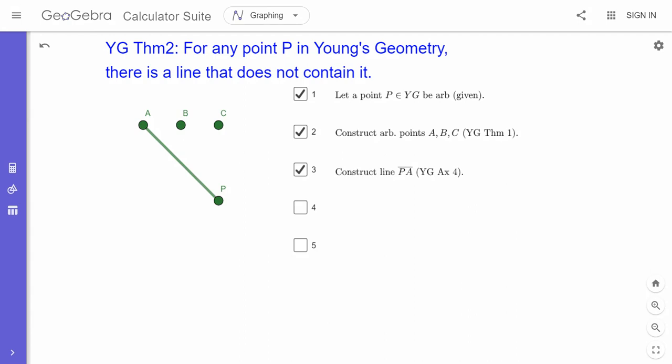Why are we doing that? Well, we know that there are most three points on any given line. So maybe B could be on here, or maybe C could be on here, but they both can't be on there.